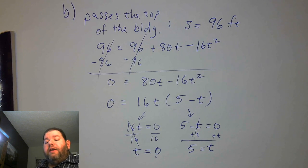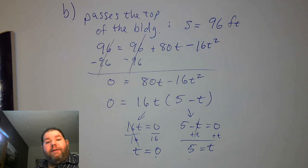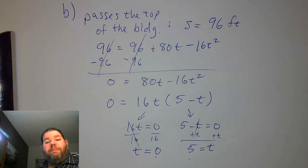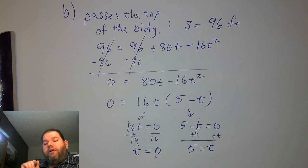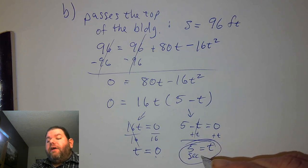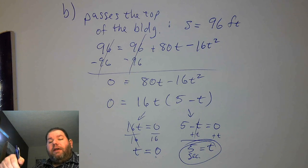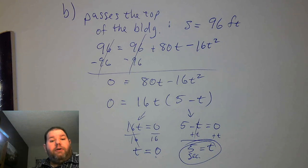So it's either 0 seconds or 5 seconds. At time 0 the ball is at the top of the building, but that's because we haven't thrown it yet — time 0 is the moment this process begins. Our question is when does the ball pass the top of the building on its way back down. So it'll take 5 seconds to go up, then come back down, and pass the building before it hits the ground.